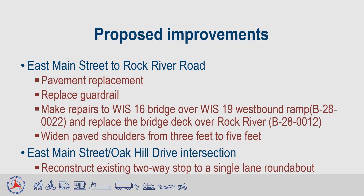The pavement replacement project will remove the existing pavement and base course. The pavement will be replaced with 6 inches of new asphalt on 26 inches of new base material on top of geogrid material. In addition to the pavement replacement, the guardrail along the corridor will be replaced, repairs will be made to the structure over the Wisconsin 19 exit ramp, the deck of the structure over the Rock River will be replaced, and the existing three-foot paved shoulders will be widened from three feet to five feet.